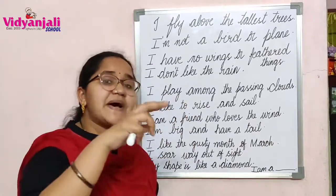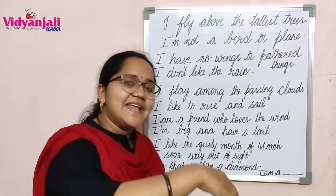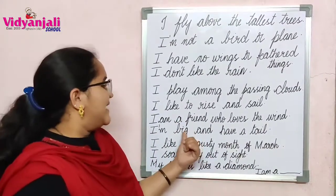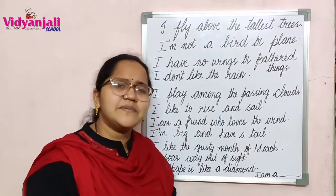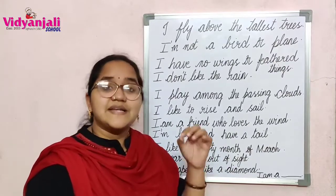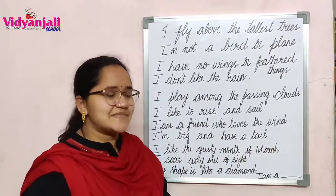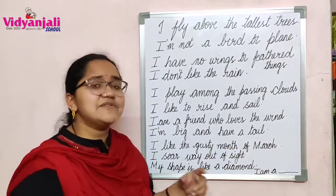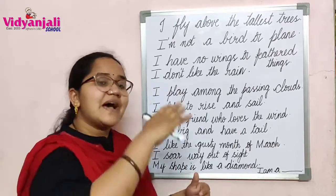I play among the passing clouds. I like to rise and sail. I'm a friend who loves the wind. I'm big and have a tail. It is not a bird, it has no wings, no feathered things, it doesn't like the rain, and it has a tail. I like the gusty month of March — gusty means windy — because it can fly high.